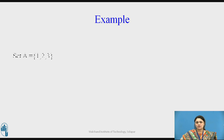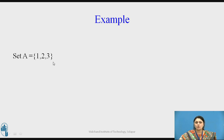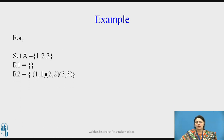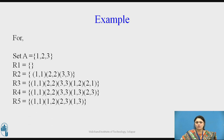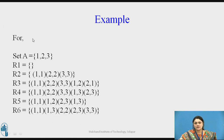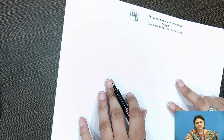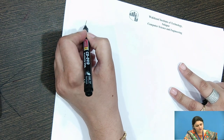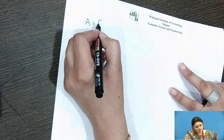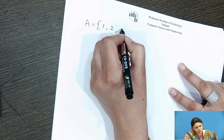Let us take an example. Consider a set A = {1, 2, 3}. We will identify whether various relations R1, R2, R3 are POSET or not. Suppose I have set A with elements 1, 2, and 3.